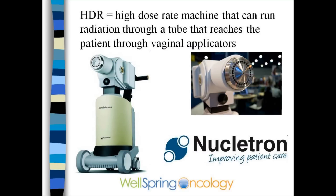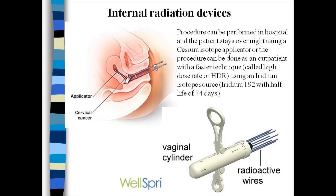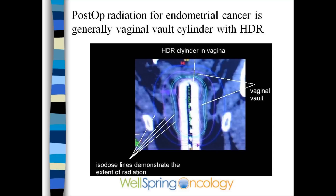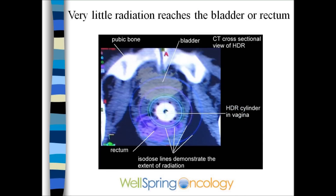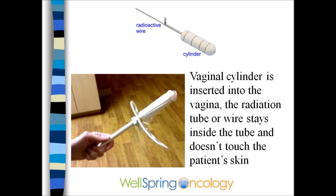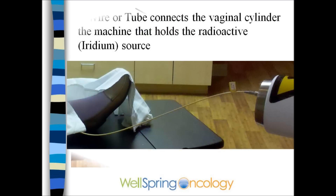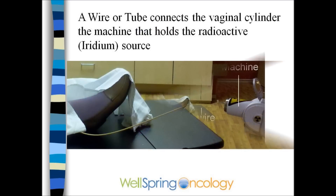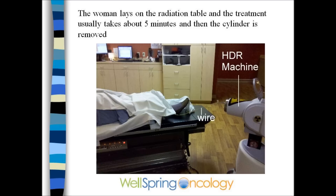Vaginal radiation is generally called HDR — high dose rate. A vaginal tube or applicator is used. The patient has this inserted into the vagina after her surgery, and the applicator is attached to a machine. CAT scans will be used to determine the radiation dose to the bladder and rectum as well as the vagina. At the time of treatment, the vaginal applicator is inserted, with a hollow tube that attaches to a cable connecting to the high dose rate or iridium device. Treatments take only a few minutes and are done as an outpatient.